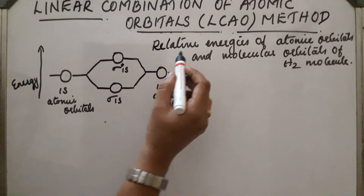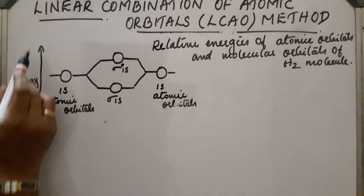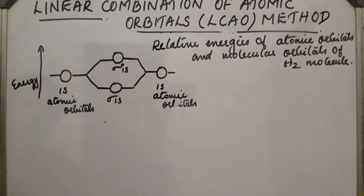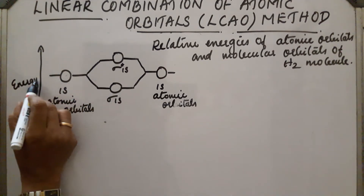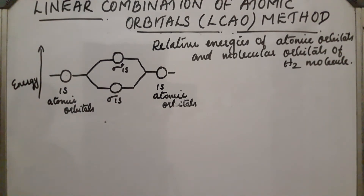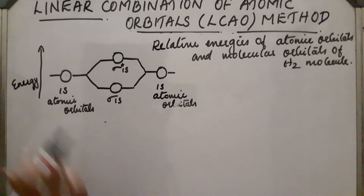Next, the relative energies of atomic orbitals and molecular orbitals of the hydrogen molecule. The atomic orbitals are on the sides, and the difference in energy is shown. Sigma 1s represents the bonding molecular orbital and sigma star 1s represents the antibonding molecular orbital. The bonding molecular orbital has lower energy than atomic orbitals, while the antibonding molecular orbital has higher energy than atomic orbitals.